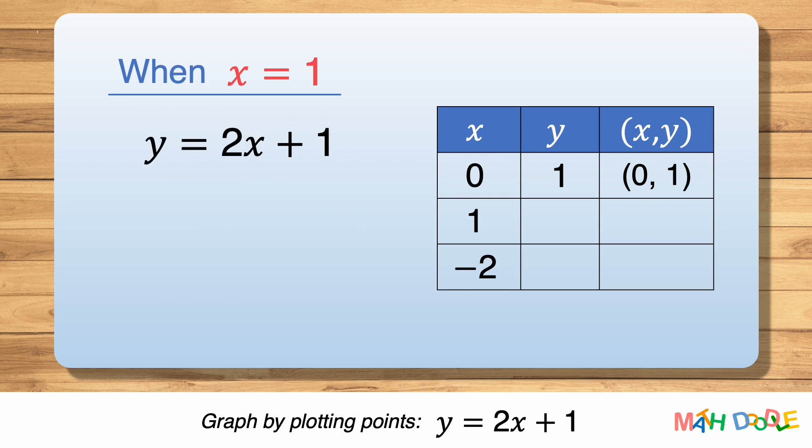Next, to find the value of y when x is 1, we substitute 1 for x. 2 times 1 is 2, and 2 plus 1 is 3. So when x is 1, y is 3. This tells us that the line passes through the point (1, 3).